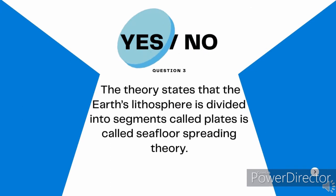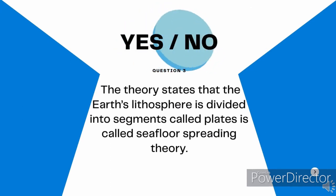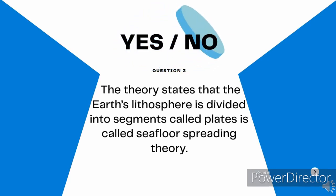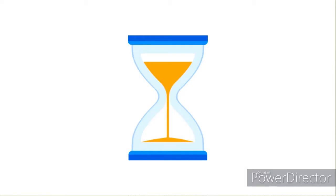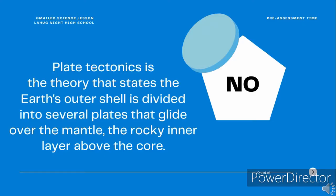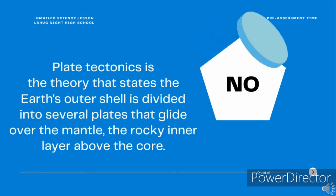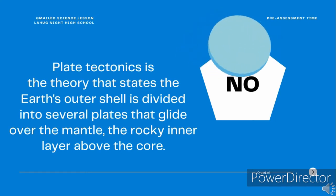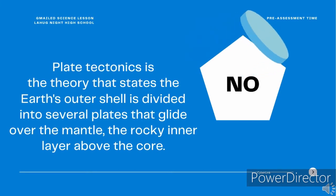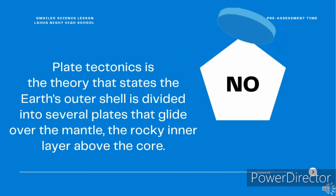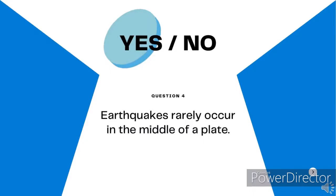Yes or no? Question 3. The theory states that the Earth's lithosphere is divided into segments called plates — it's called sea floor spreading theory. Yes or no? The answer is no. Plate tectonics is the theory that states the Earth's outer shell is divided into several plates that glide over the mantle, the rocky inner layer above the core.